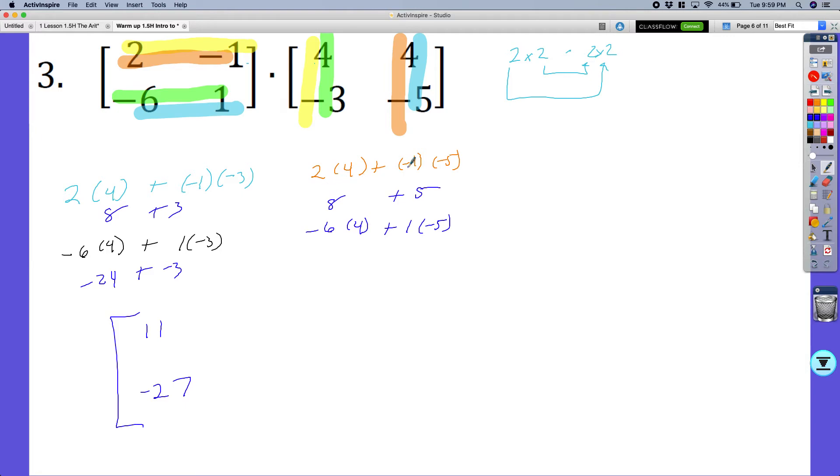Let's see, 8 plus negative 5. I just want to make sure I did this one right. First row, column, negative 5. I think I did that right.